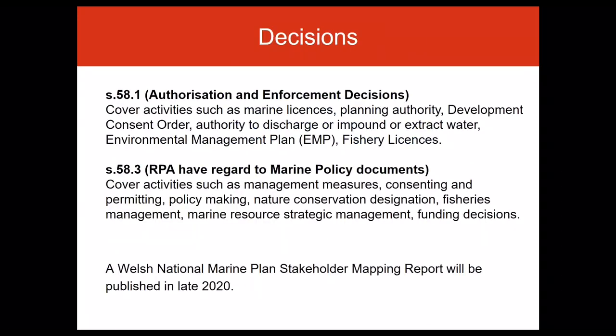This slide gives examples of some of the decisions that will be considered under Section 58 of the Marine Coastal Access Act. Section 58.1 decisions are easier to identify and cover activities such as marine licences, planning authority, development consent order, authority to discharge or impound or extract water; other examples are on the slide. Section 58.3 means public authorities must also have regard to the appropriate marine policy documents when taking decisions such as management measures — for example, switch between harbour berthing purposes — marine resource strategic management — for example, change in aggregate tonnage limits — and others listed on the slide.